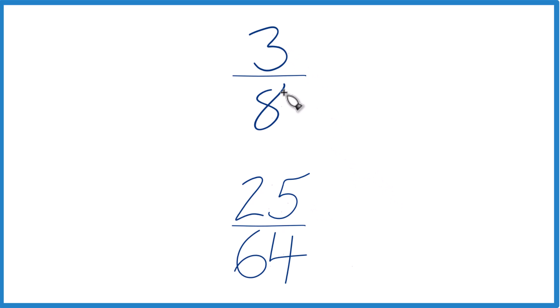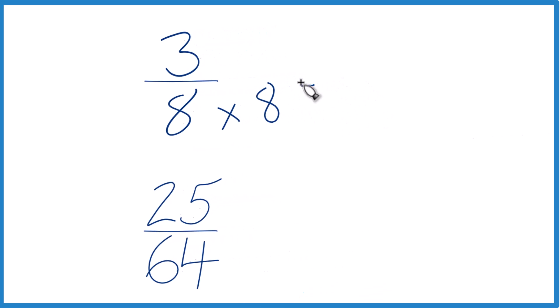The other way to figure out whether 3/8 is larger or smaller than 25/64 is to find a common denominator. Right now we have 8 and 64. I know that 8 times 8 would give me 64.